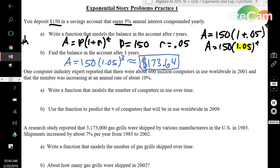Moving on to number 2. One computer industry expert reported that there were about 600 million computers in use worldwide in 2001, and that number was increasing at an annual rate of about 10%. The keyword being increasing, therefore it's going to be growth.